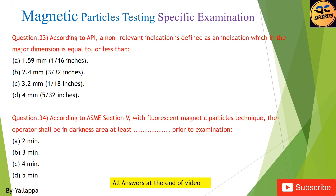Question 33: According to API, a non-relevant indication is defined as an indication which in the major dimension is equal to or less than: (A) 1.59 mm; (B) 2.4 mm; (C) 3.2 mm; (D) 4 mm.